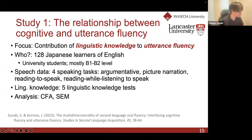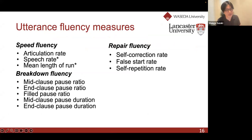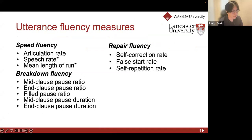Here is a list of the fine-grained fluency measures. We prepared a comprehensive set of fluency measures. One thing to note: we handle two composite measures — speech rate and mean length of run — as speed fluency measures for the sake of statistical analysis. Since we used latent variable analysis including confirmatory factor analysis and structural equation modeling, we cannot construct a latent variable with only a single observed variable like articulation. Theoretically, speech rate and mean length of run largely tap into the density of information, representing speed fluency as a construct.